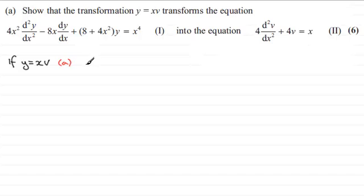Now to get dy by dx, I need to differentiate this with respect to x. So therefore, differentiating y with respect to x gives us dy dx. And to differentiate xv, I'm going to need to use the product rule. So if we take x and we multiply the differential of v with respect to x, that would be dv dx.